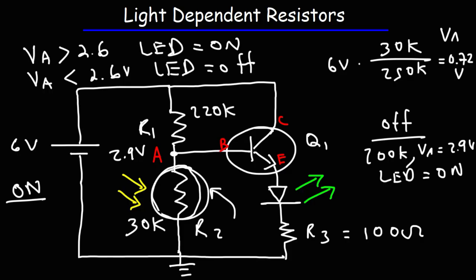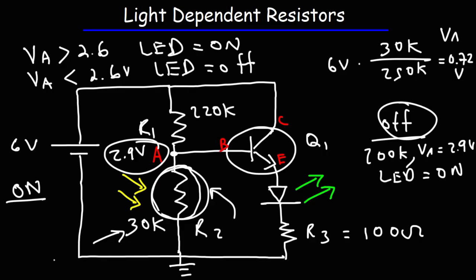So that's how it works: when the light switch is turned on, the resistance of the LDR drops, the voltage at point A decreases, it turns off the transistor, which turns off the green LED. But when the main light is off, the resistance of the LDR goes back up, so VA goes back to 2.9 volts, turning the transistor on. Current flows from the battery through the base to the emitter, and only a small amount of current flows through the base.